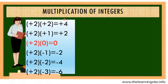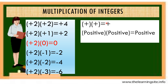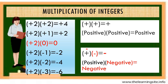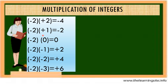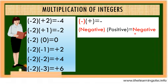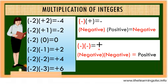In multiplication of integers: positive times positive equals positive. Positive times negative equals negative. Negative times positive is negative. Negative times negative is positive.